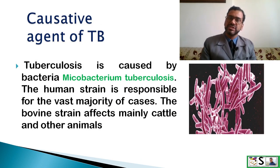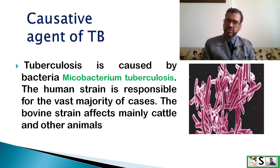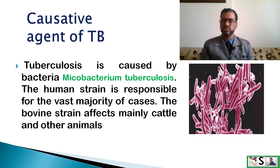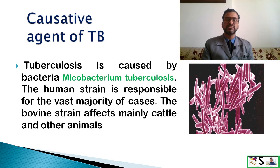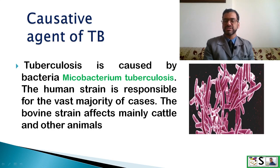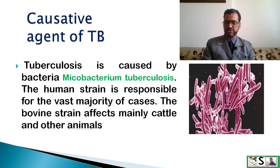What is the causative agent of tuberculosis? The causative agent is a bacteria known as mycobacterium tuberculosis. The human strain is responsible for the vast majority of cases. The bovine strain affects mainly cattle and other animals. This is the microscopic structure of mycobacterium tuberculosis.